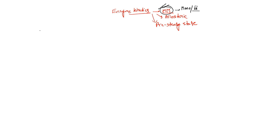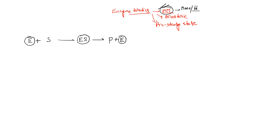Michaelis-Menten kinetics talks about the binding of an enzyme to its substrate. We have an enzyme and a substrate — the substrate will bind to the enzyme and form an enzyme-substrate complex (ES). This is very important: the formation of the enzyme-substrate complex. Then this ES will break down into a product, and the enzyme will remain as it is. This is a reversible reaction, and there are two stages.